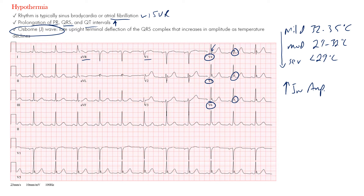The main takeaways here: if you see patients coming in cold, they'll have a slower rate. If it's AFib or an atrial arrhythmia, it's going to be slower. Their intervals tend to be prolonged. Be aware of ectopic beats, arrhythmias, and these Osborne waves that are characteristic and increase in amplitude as the patient gets colder.